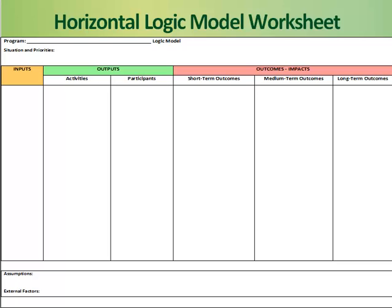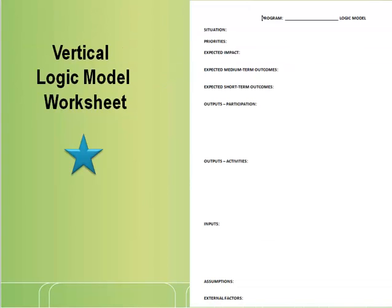There are two formats of the logic model worksheets that you can download to your computer and use: a horizontal and vertical version. This is the horizontal version — you should have a copy of this worksheet in the materials you printed out earlier. You can return to the ODE Unit SharePoint site in the Online Training folder to download and save this worksheet to your computer for future use. This is the vertical logic model worksheet, also found on the ODE Training SharePoint site in the Online Training folder. You may want to pause the training at this time and locate these two worksheets, and download them to your computer so they'll be convenient when you're ready to develop your own logic model.